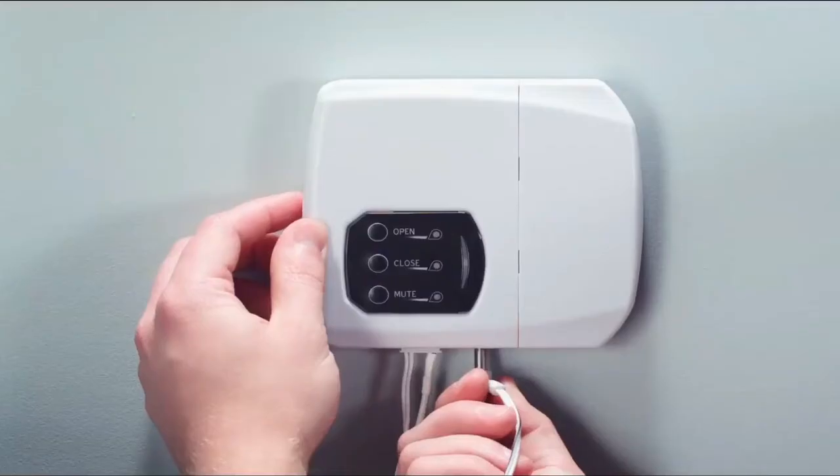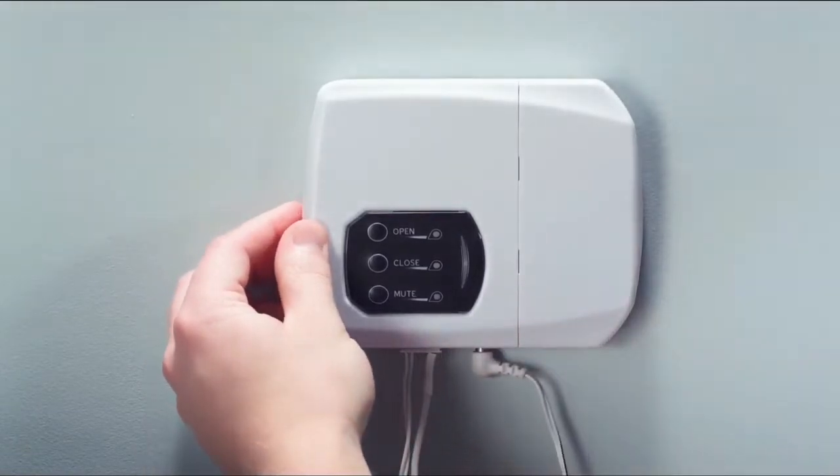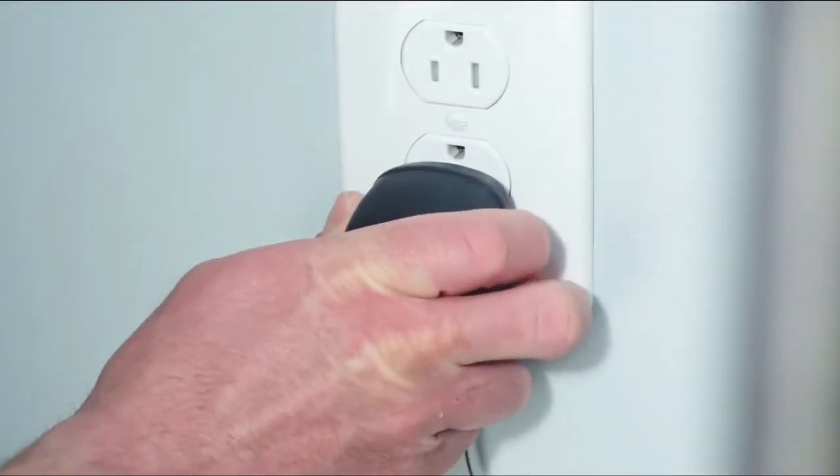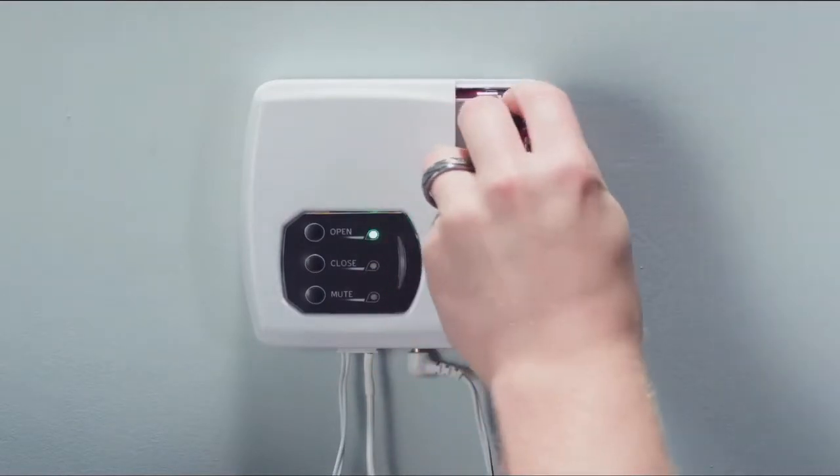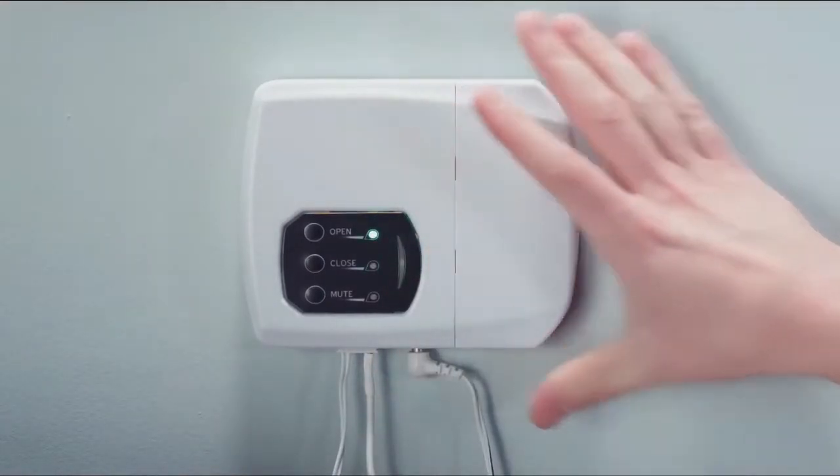Plug the pin on the end of the AC power adapter cord into the bottom of the control panel, then plug the AC adapter into a wall outlet to set up the battery backup system.